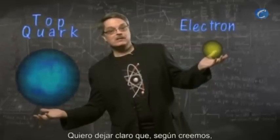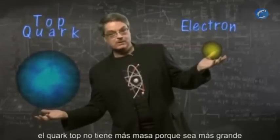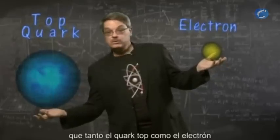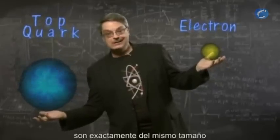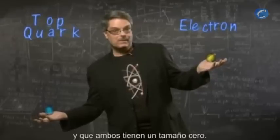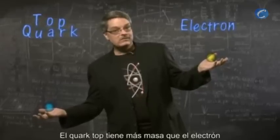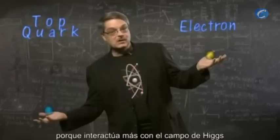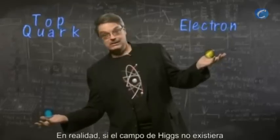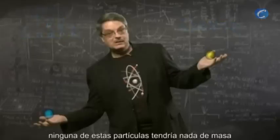I'd like to stress that we believe the top quark is not more massive because it's bigger — it's not. In fact, we believe that both the top quark and the electron are exactly the same size. Indeed, they both have zero size. The top quark is more massive than the electron simply because it interacts more with the Higgs field. Actually, if the Higgs field didn't exist, neither of these particles would have any mass at all.